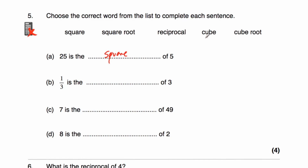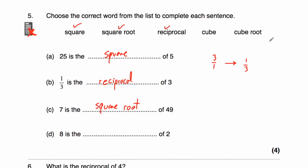Because 3 is 3 over 1, and when you find the reciprocal by flipping it over, you get 1 third. So it's the reciprocal of 3. Part C: 7 is the something of 49 — the square root of 49 is 7, so 7 is the square root of 49. Part D: 8 is the something of 2. We've used square, square root, and reciprocal, so it's likely cube or cube root. 2 cubed is 8, so 8 is the cube of 2.